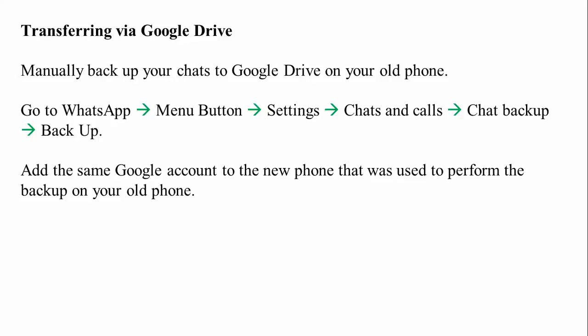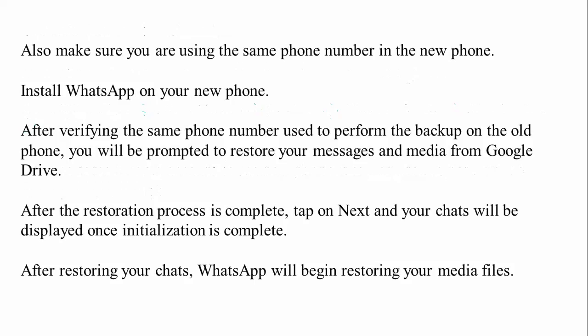Here is the second method: transferring via Google Drive using your Gmail account. First, manually back up your chat. Go to WhatsApp, tap the menu button on the right side of the top menu, go to Settings, then Chat History, then Chat Backup, and then tap Backup again. You will see an option for Google Drive backup. Add the same Google account to the new phone that was used to perform the backup on your old phone. Also make sure you are using the same phone number on the new phone.